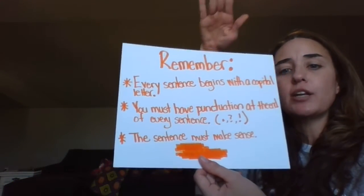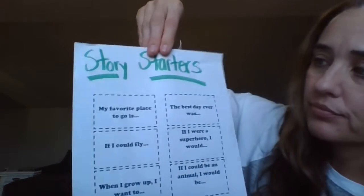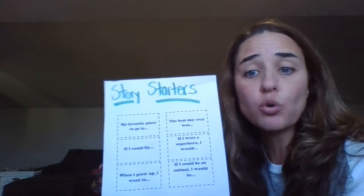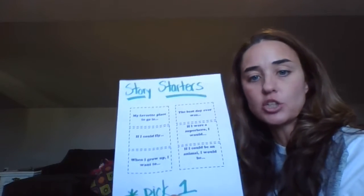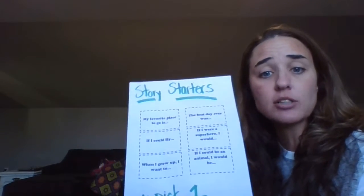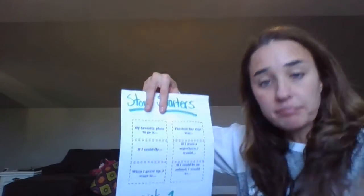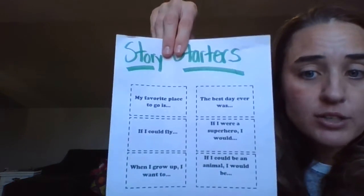Now for the topic of your story, you can pick between any of these story starters. The first one is 'My favorite place to go is' — you would start your story with that sentence and continue writing using the narrative elements we talked about. You could also write 'If I could fly' and write a story about that.